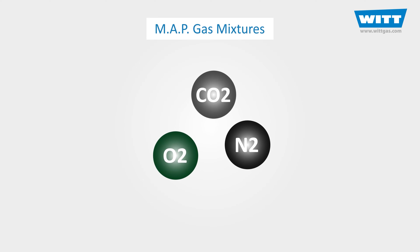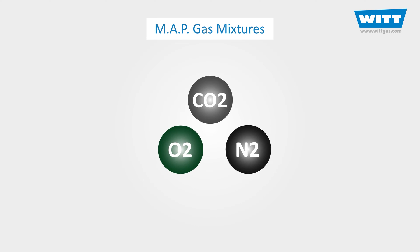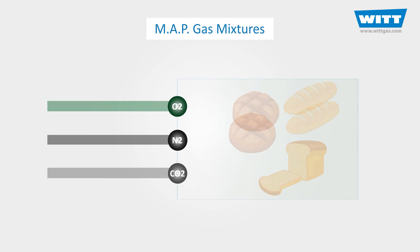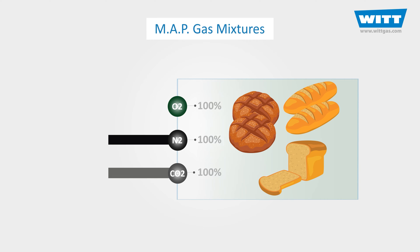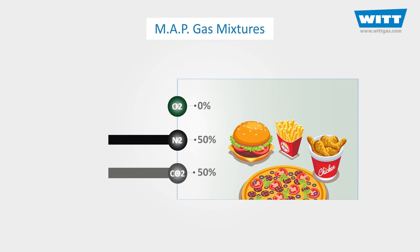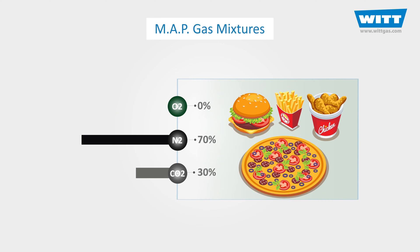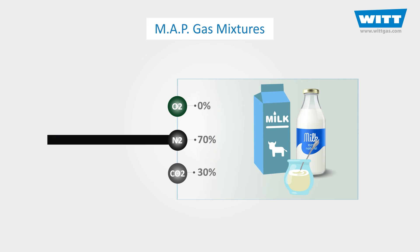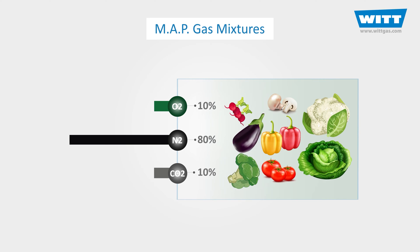Modified Atmosphere Packaging, or MAP for short, increases a food's shelf life and saleability, as well as maintaining food quality during its storage period. But how do we achieve optimal MAP? This is what we aim to answer in this video, so please stay with us to the end to find out more about the details and equipment for an ideal MAP system.